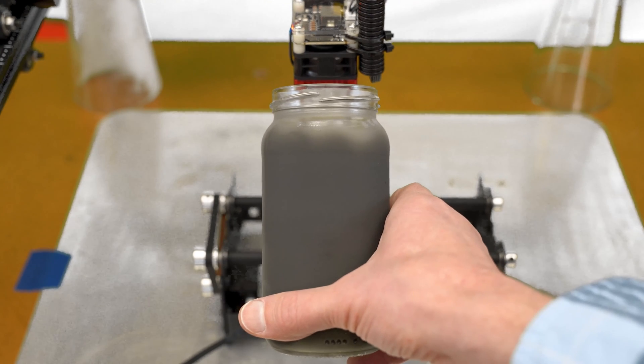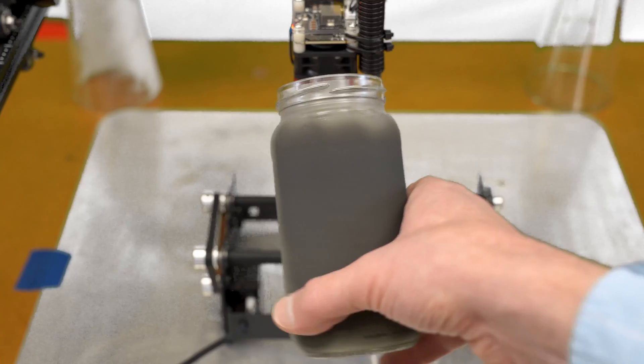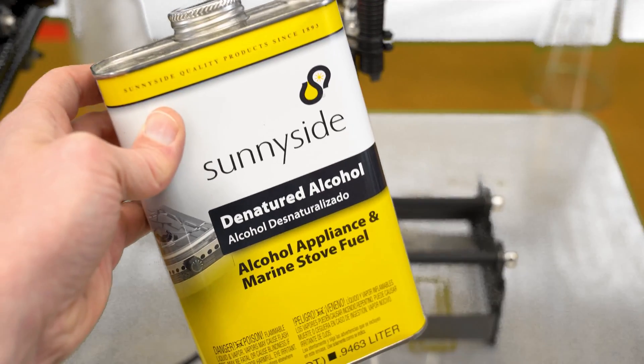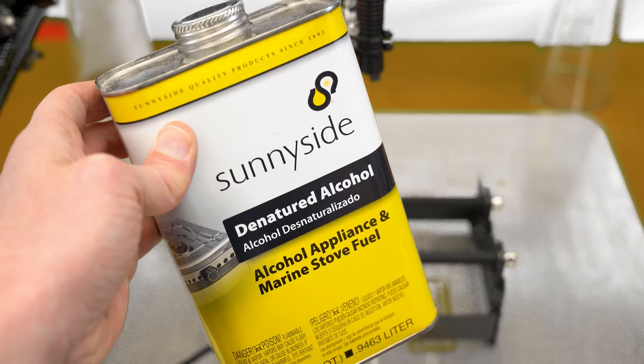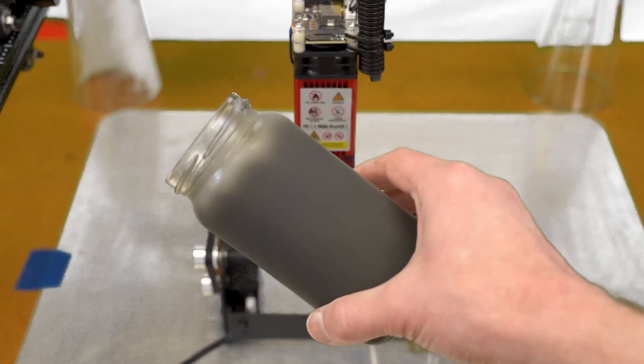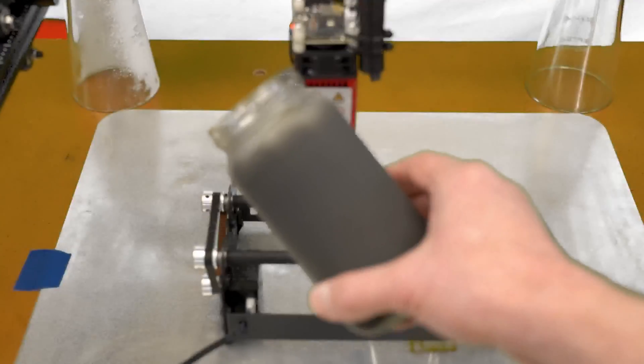I sprayed this on using a mixture of 50% tempera paint and 50% denatured alcohol. This thins it down, makes it easier to spray, and it dries so much quicker. I'm going to place this back on the rotary, do a quick engraving, and I'll be back in just a second.